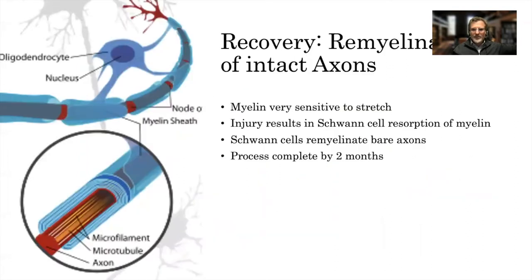Schematically, the blue represents demyelination, then axotomy, then structural damage — but along any degree of strain you can have all three types of damage occurring simultaneously. Recovery occurs first by remyelination of intact axons. Myelin is very sensitive to stretch; injury results in Schwann cell resorption of the myelin itself, followed by remyelination of bare axons. The process is complete by about two months.